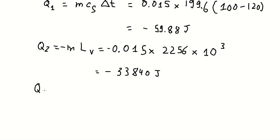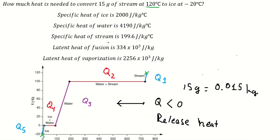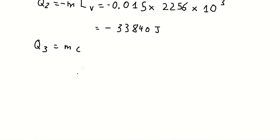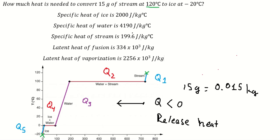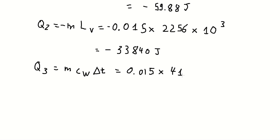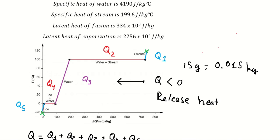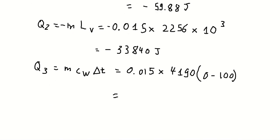Now we go to cube of number 3. We do the same, but this one is the specific heat of the water in here. So we have 100 cube number 0 in here. And we have negative 6,285.